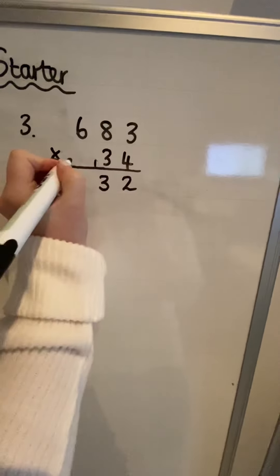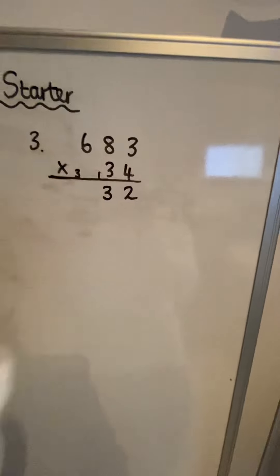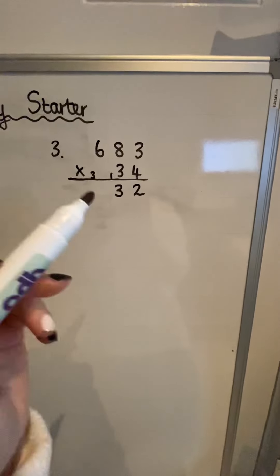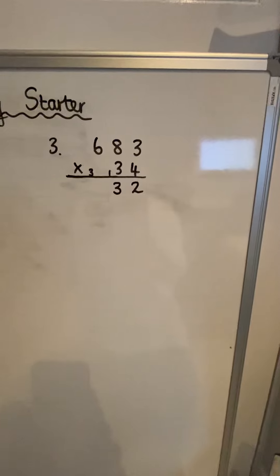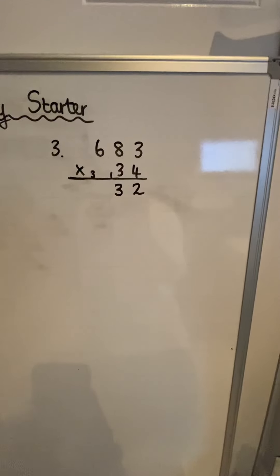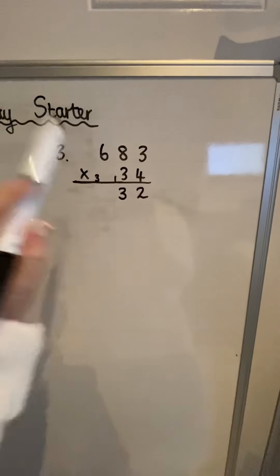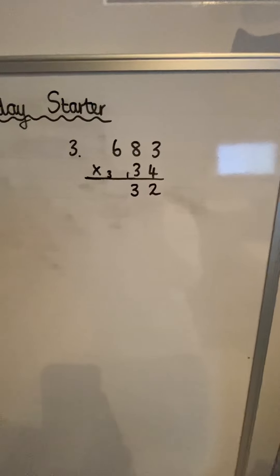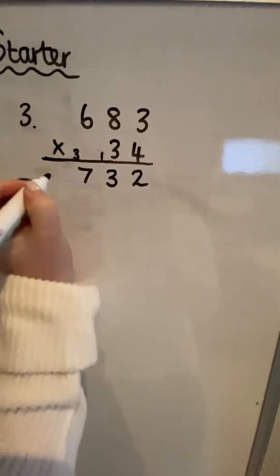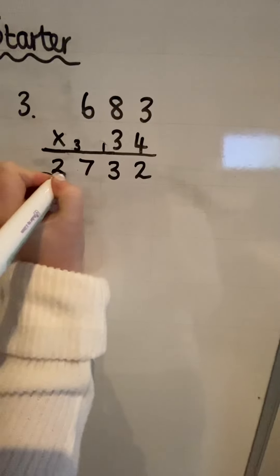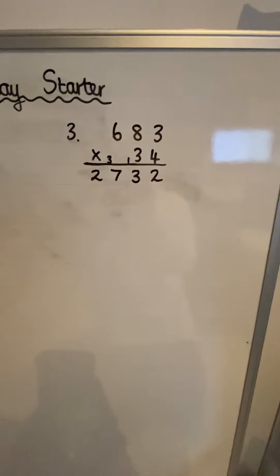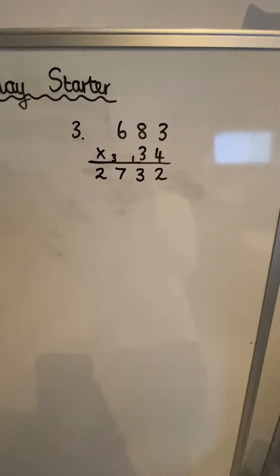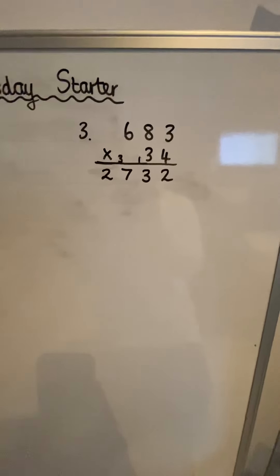So I put the three here and carry that three into the next column. Now I'm going to do six times four, which gives me 24, but I've still got that carried three to add on, so that gives me 27. I put the seven here and the two here, so the first partial product is 2732.